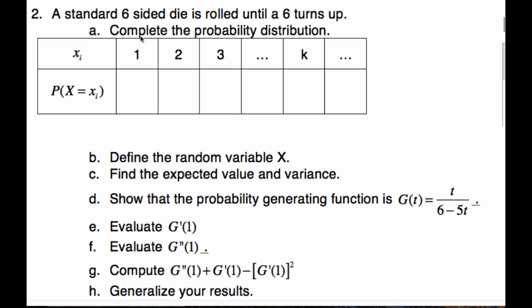Okay, in this example, we have a standard six-sided die and it's rolled until a six turns up. We're going to complete the probability distribution. When we do this, I know the probability of getting a one the very first time is a one in six chance.